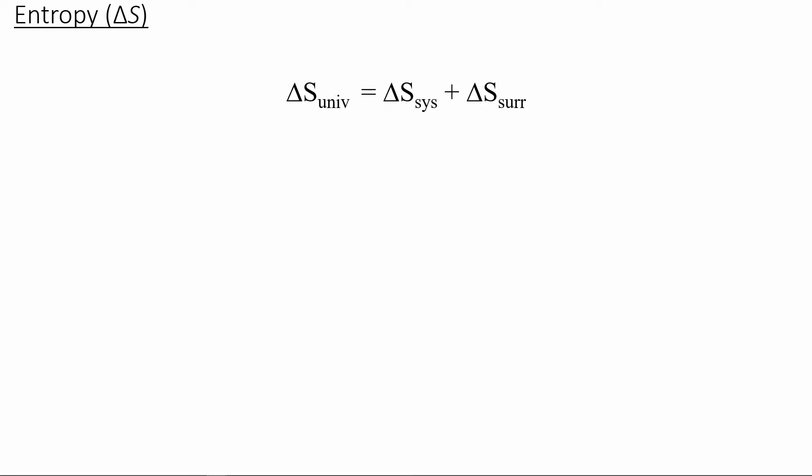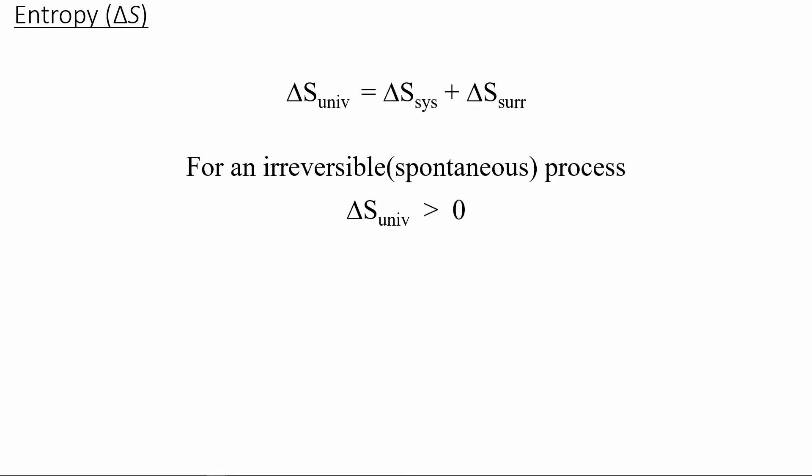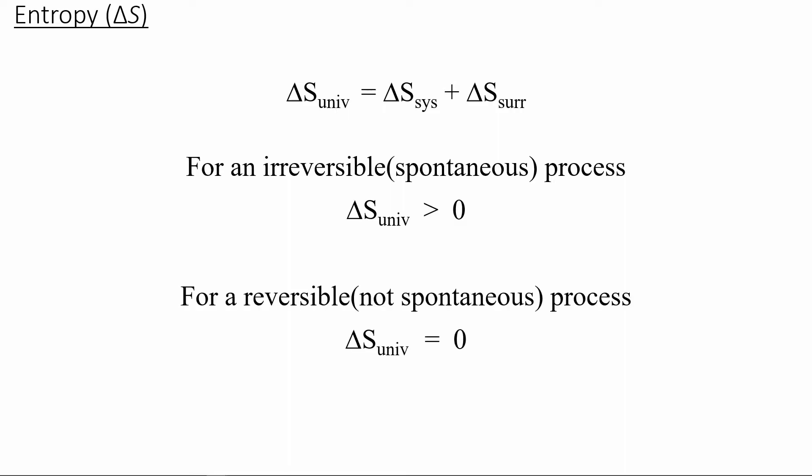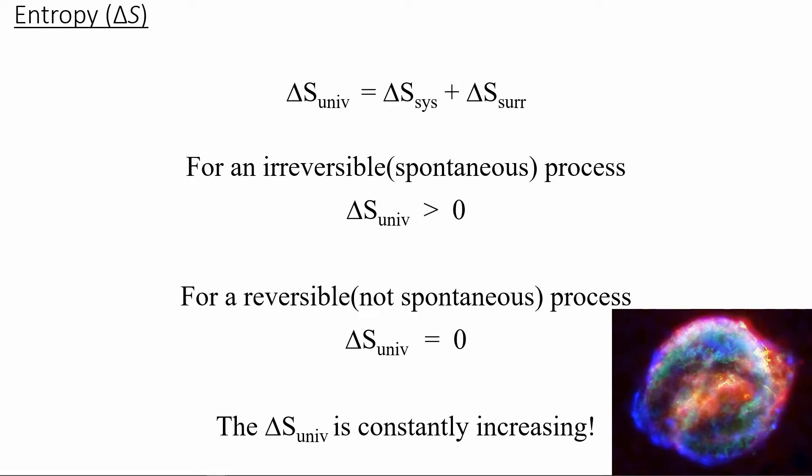When comparing the entropy of our system to the surroundings, the total change in entropy of the universe equals the change in entropy of the system plus the change in entropy of the surroundings. For an irreversible spontaneous process, the change in entropy of the universe is greater than zero. For example, in order to get water back up to the top of a waterfall, that would be a non-spontaneous process — you'd have to carry it up. The water flowing down the waterfall is spontaneous and irreversible. For a reversible or non-spontaneous process, the total change in entropy equals zero. The change in entropy of the universe is constantly increasing, and that leads to the inevitable heat death of the universe.